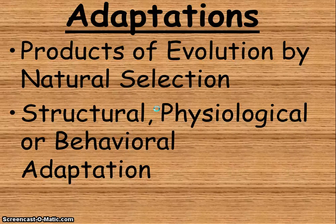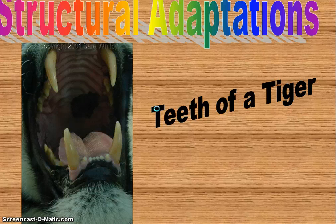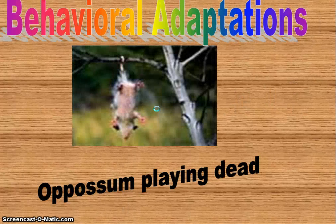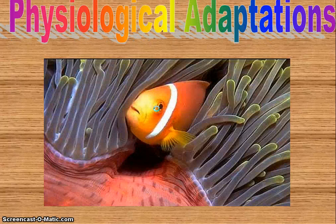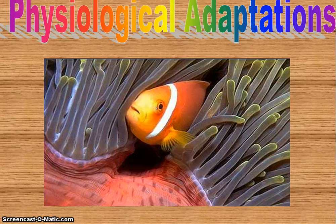Survival of the fittest and natural selection means those with the best adaptations will survive and reproduce. An adaptation is a product of evolution because of natural selection. We have structural adaptations, physiological, and behavioral adaptations. Structural would be something like the teeth of the tiger, important in ripping through flesh. Behavioral adaptations would be like an opossum playing dead. Physiological adaptations are like the clownfish that can survive in the sea anemone — it doesn't get stung because of the physiological nature of its scales.